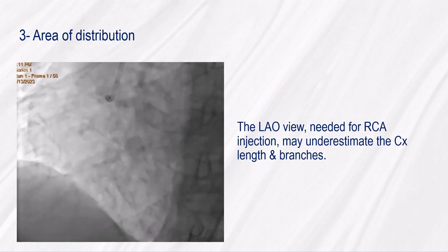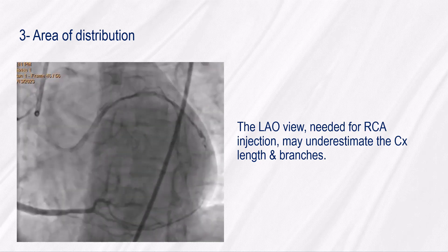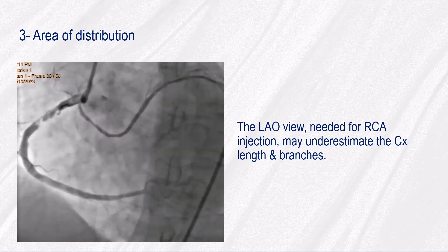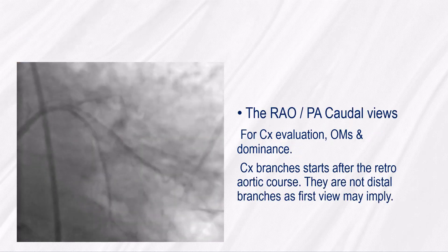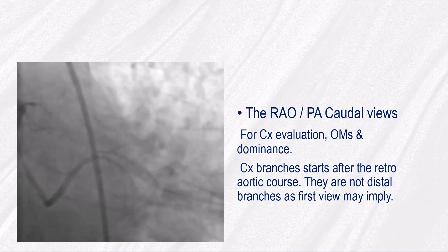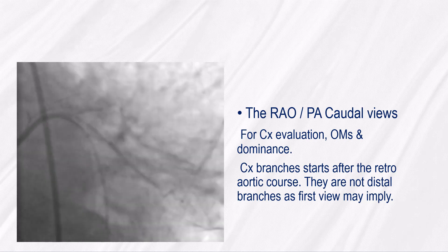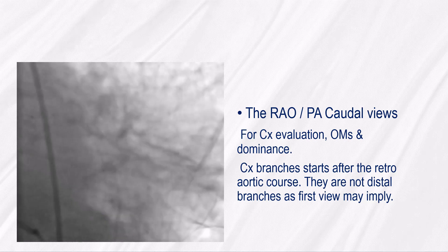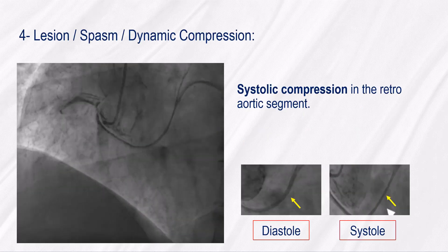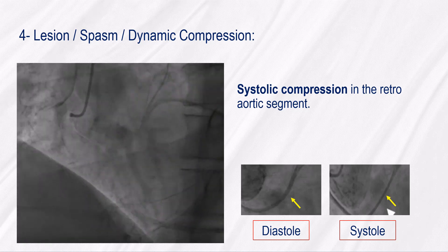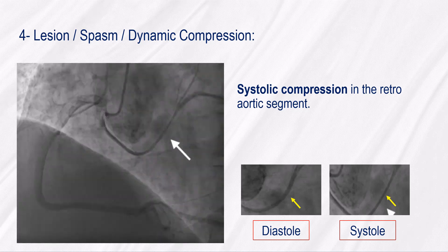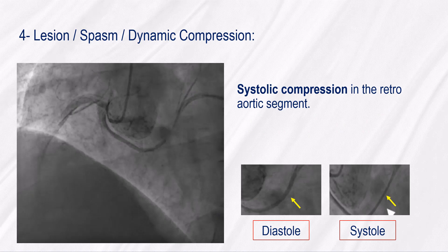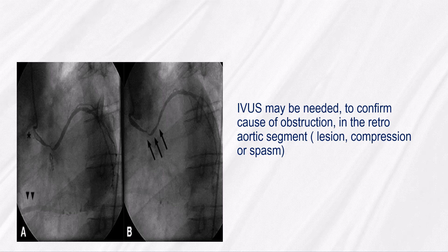The LAO view needed for RCA injection may underestimate the CX length and branches. The CX branches start after the retro-aortic course; they are not disturbed branches as a first view may imply. The retro-aortic course should be evaluated for any lesions. In this case, there is systolic compression in the retro-aortic segment. IVUS may be needed to confirm the cause of obstruction in the retro-aortic segment — whether it is a lesion, compression, or spasm.